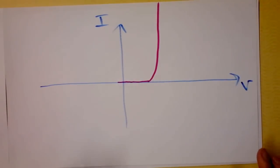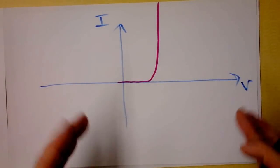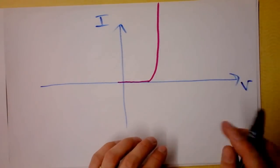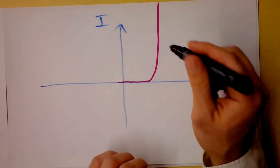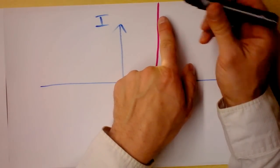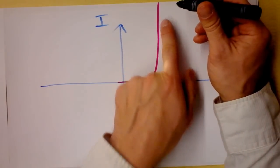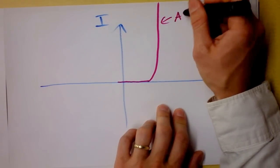well this doesn't have an infinite slope because that's not realistic, there is actually going to be some thermal stuff going on, and a little bit of effective resistance, but what we've got is nearly infinite conductivity and almost no resistance.